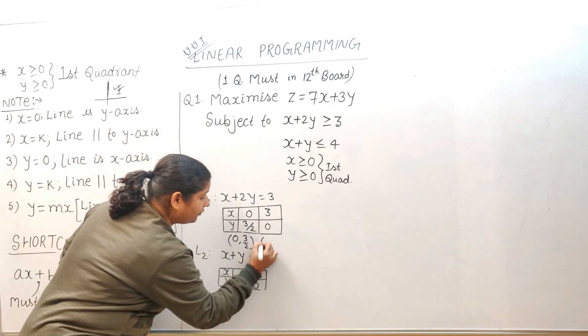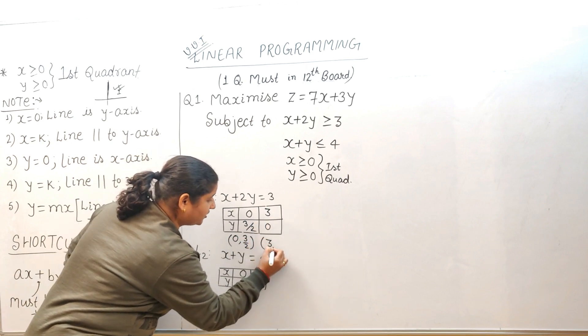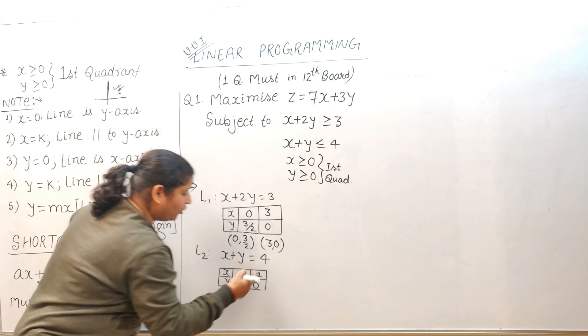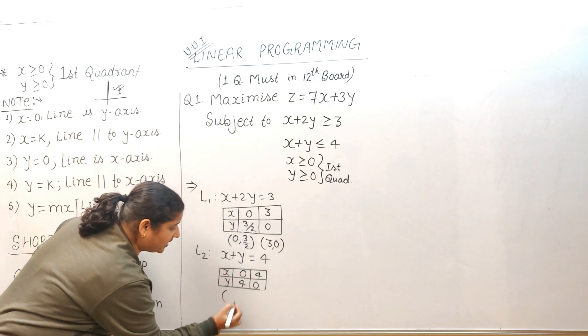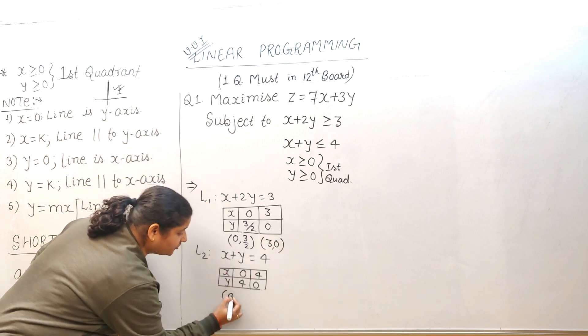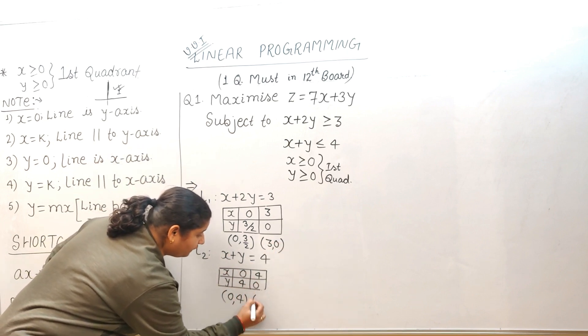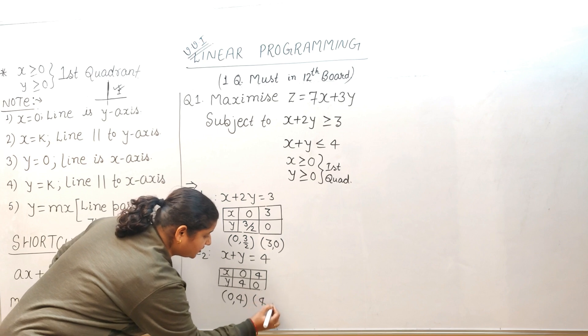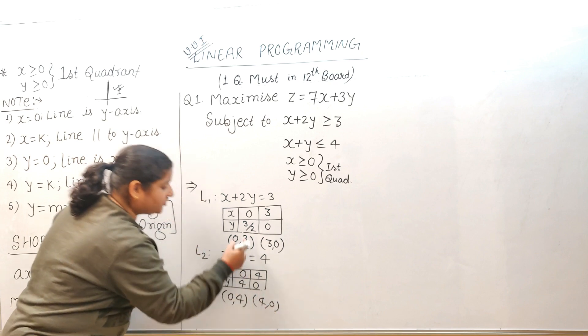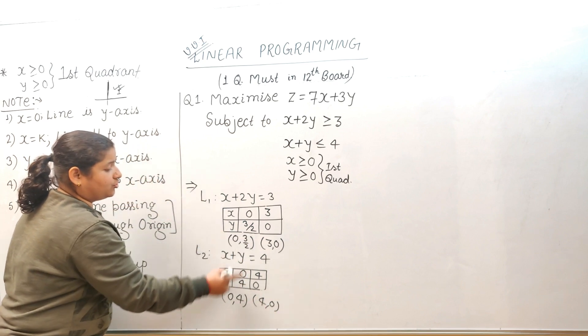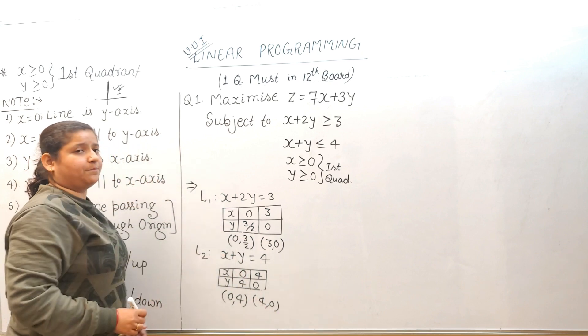We have 4 points: (0, 3/2), (3, 0) from the first equation, and (0, 4), (4, 0) from the second equation. These 4 points we have to plot on the graph.